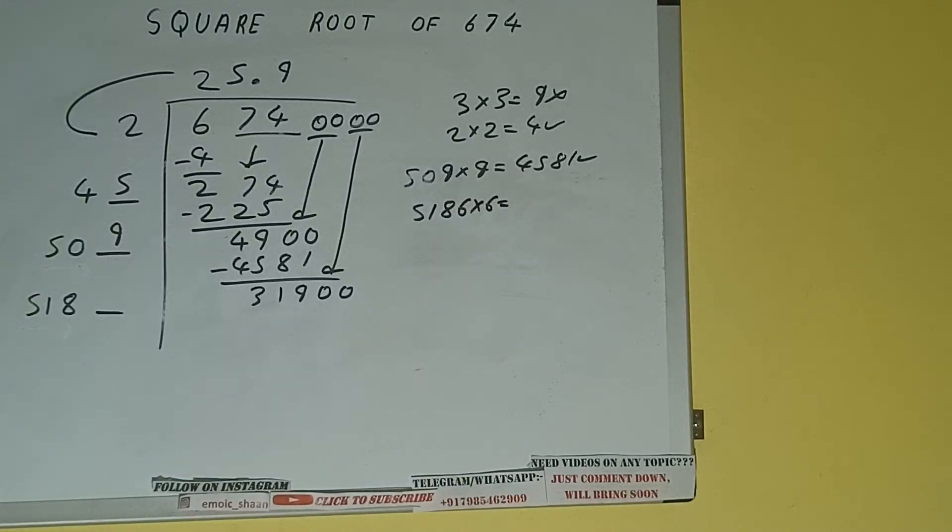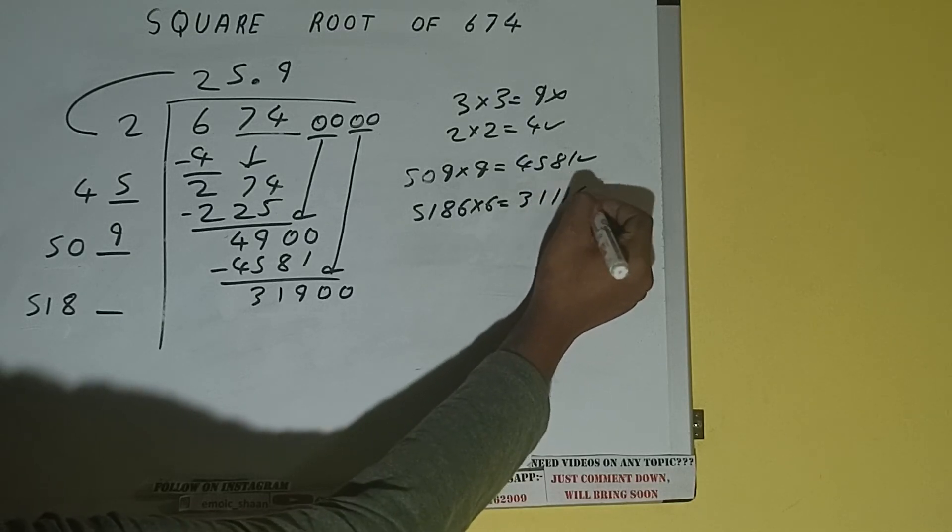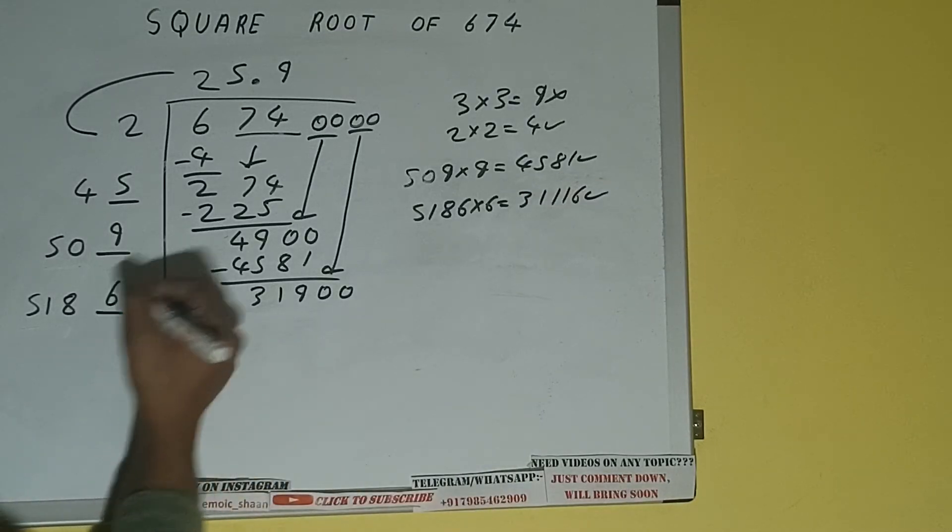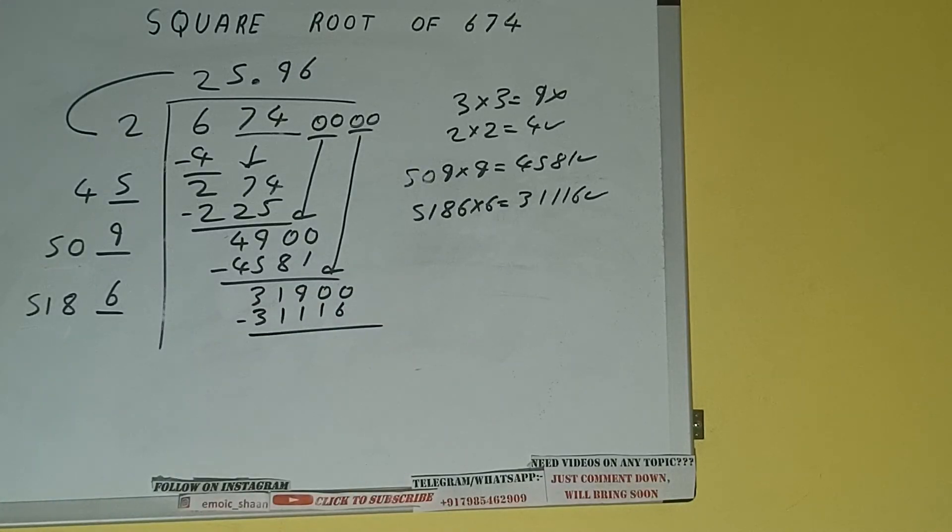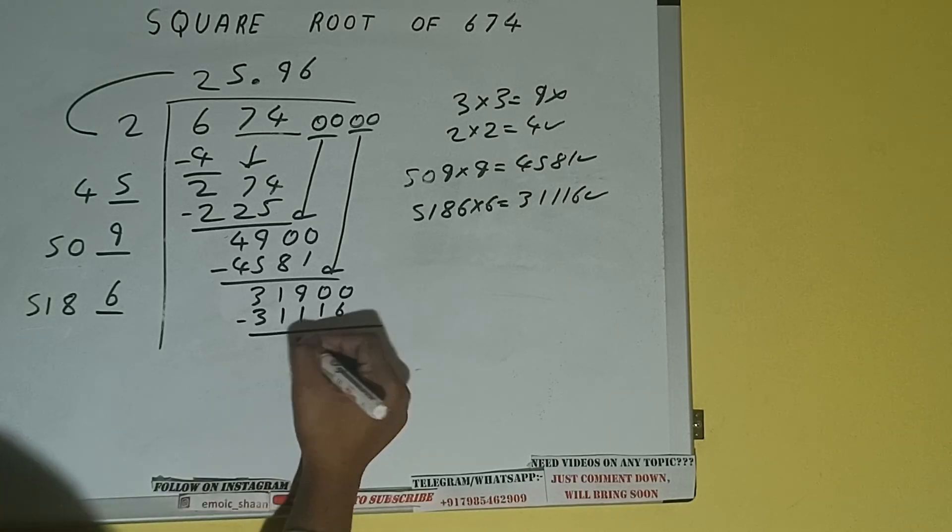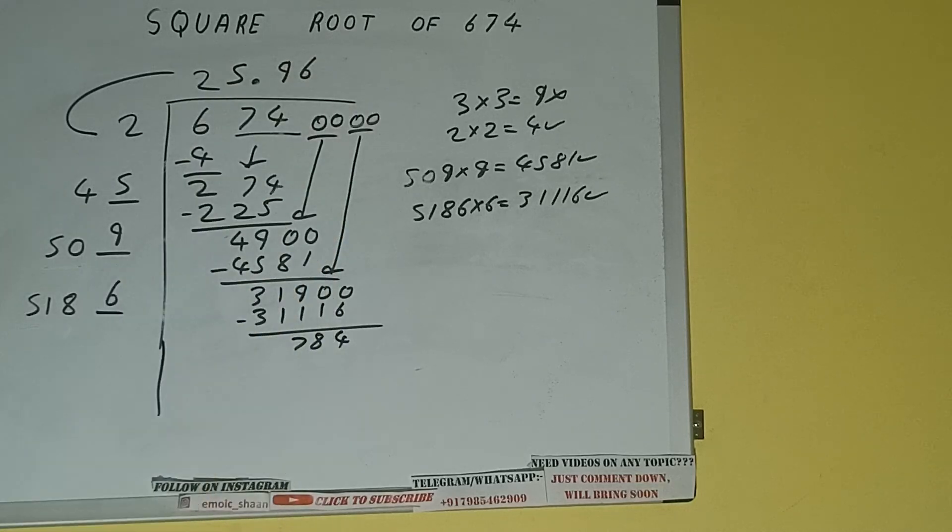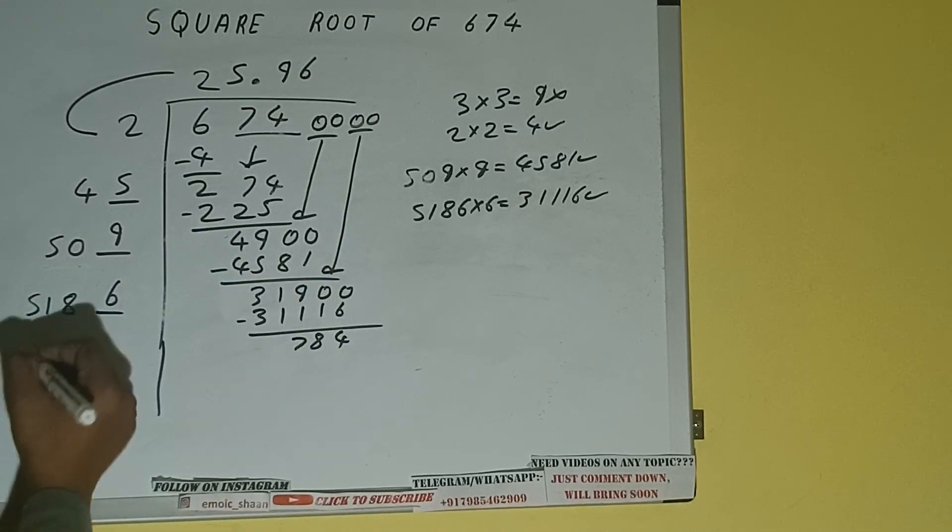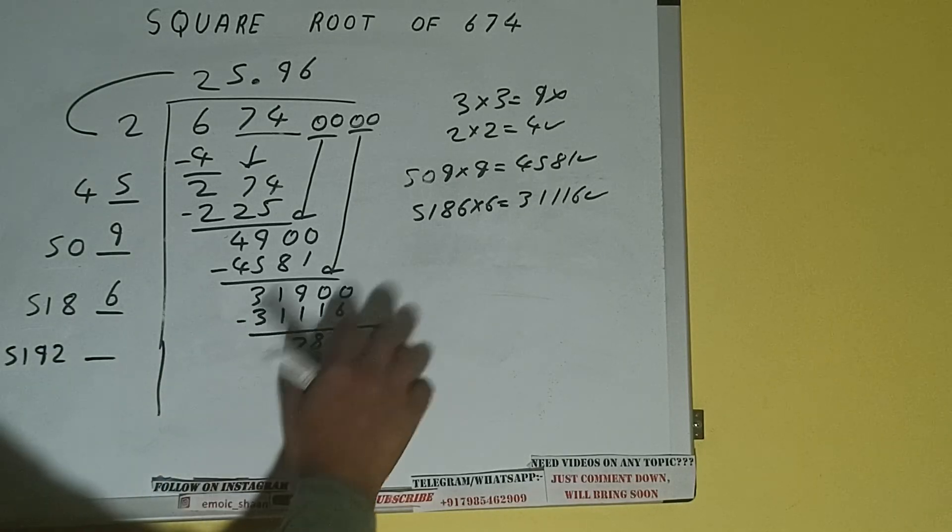And 51 plus 5 will be 5186 plus 6 will be 5196, and one digit extra. And this number we need to make it big, so bring the next pair of zeros down, and it will be 78,400. Compare this: 51 and 78, so we can try 1 time. So 1 here and 1 here, but we don't need to